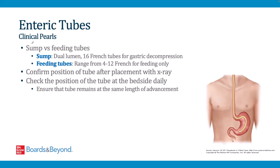Key clinical pearls about enteric tubes: Sump tubes are dual-lumen 16 French tubes used for gastric decompression and can be placed on suction. Feeding tubes are smaller (4–12 French), more comfortable, but cannot be placed on suction and have a higher risk of clogging. Any time a tube is placed, confirm its position with an x-ray to ensure it is not misplaced in the lungs. Check tube placement daily at the bedside by verifying the length of advancement — most tubes require 50–60 cm to reach the stomach.